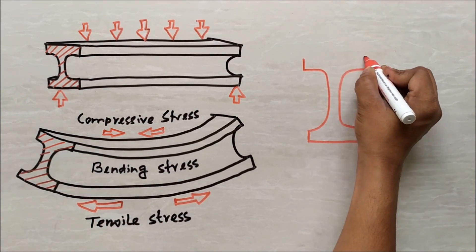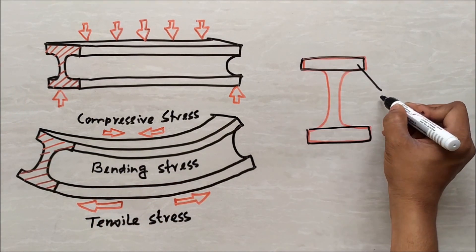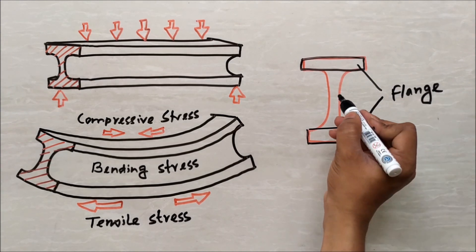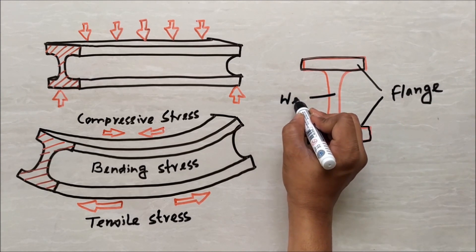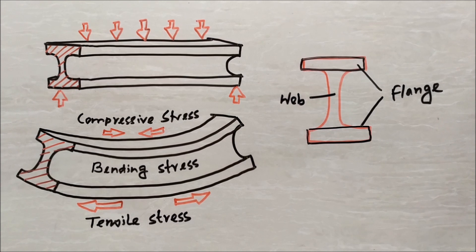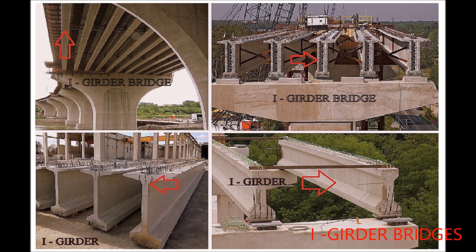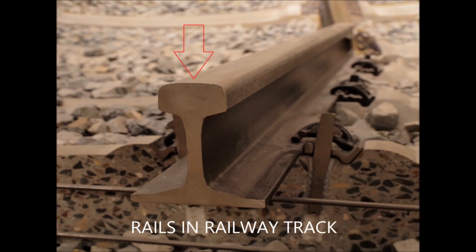In an I section, the top and bottom horizontal elements are called flanges. And the vertical element on the middle is called as web. This combination of elements make this section so stronger that it used in bridges with long span as a main superstructure member. And if you notice at the rails on railway track, that is also an I section to resist heavy load.